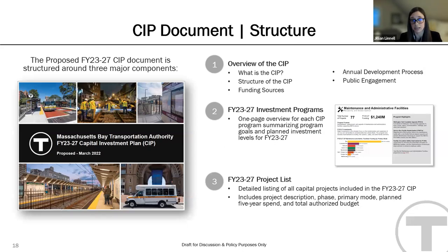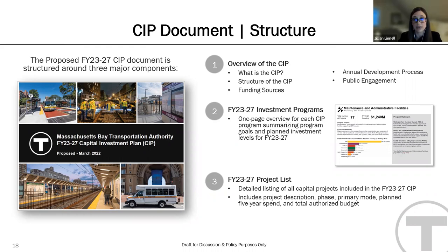This year, the MBTA developed and released a standalone five-year CIP document, which is currently available on the MBTA website. The document is structured around three major components: first, an overview of the capital plan including details about what the CIP is, how it is funded, and the annual development process; second, one-page overviews for each CIP program with summaries of program goals and investment levels by mode; and finally, a detailed listing of all capital projects in the 23-27 CIP, including brief project descriptions, project phase, primary mode, planned five-year spend, and total authorized budget.